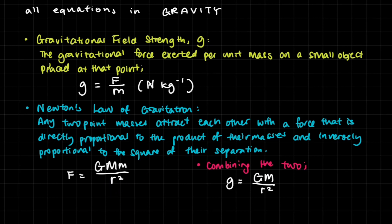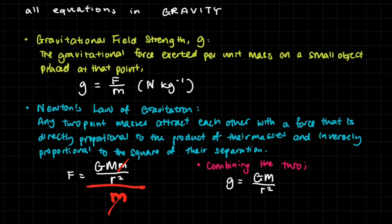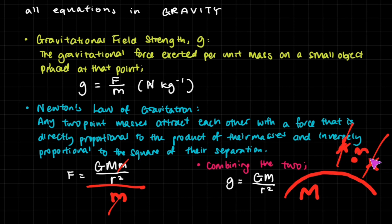Now if we want a new definition for gravitational field strength g, remember that g is force divided by m. So we take F equals GMm over R squared and divide through by the small m — because big M is the source mass (e.g. the Earth) creating the field, and small m is the small object placed in that field. Crossing out the small m gives us g equals GM over R squared. That's the distinction between capital M and small m.